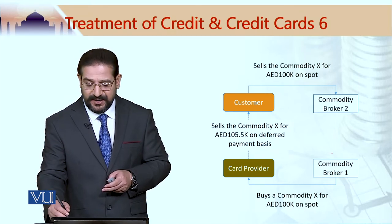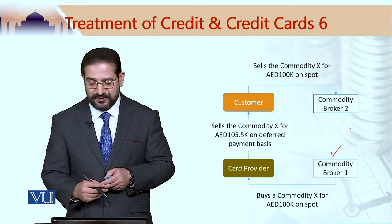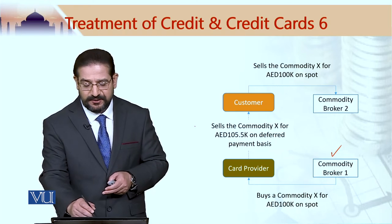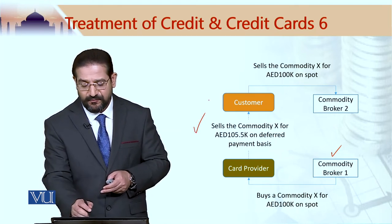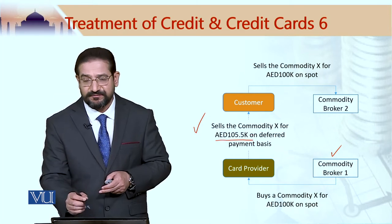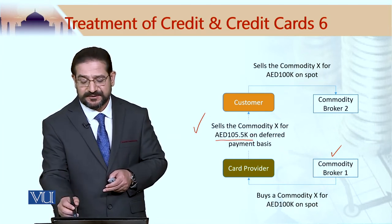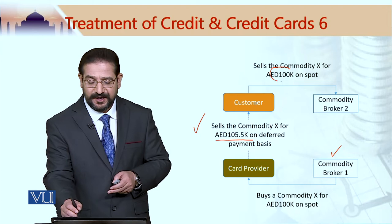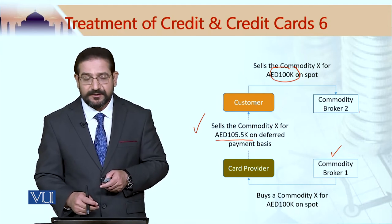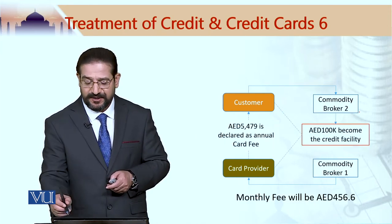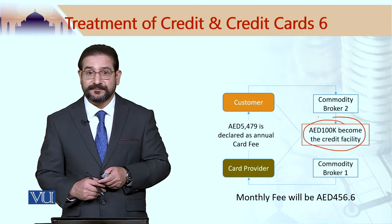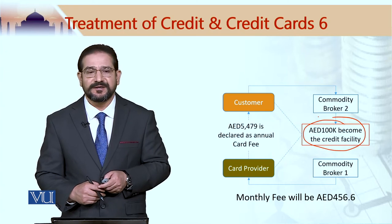The card provider would buy commodity X from the market from commodity broker 1 for 100,000 dirhams, and would sell it on to me, Humayudar, for 105,500 dirhams on a deferred payment basis. I would then sell this commodity to commodity broker 2, and this would give me 100,000 dirhams worth of credit facility.